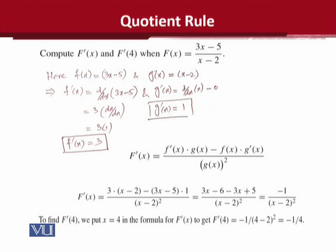It means کہ جو جواب آیا ہے minus 1 over x minus 2 raised to the power whole square آپ اس کے اندر بھی x کی جگہ 4 لگائیں اور آپ کے پاس ایک numerical answer آئے گا which is minus 1 over 4. Basically یہ derivative کی numerical value ہے and it is more meaningful more easy to interpret as well